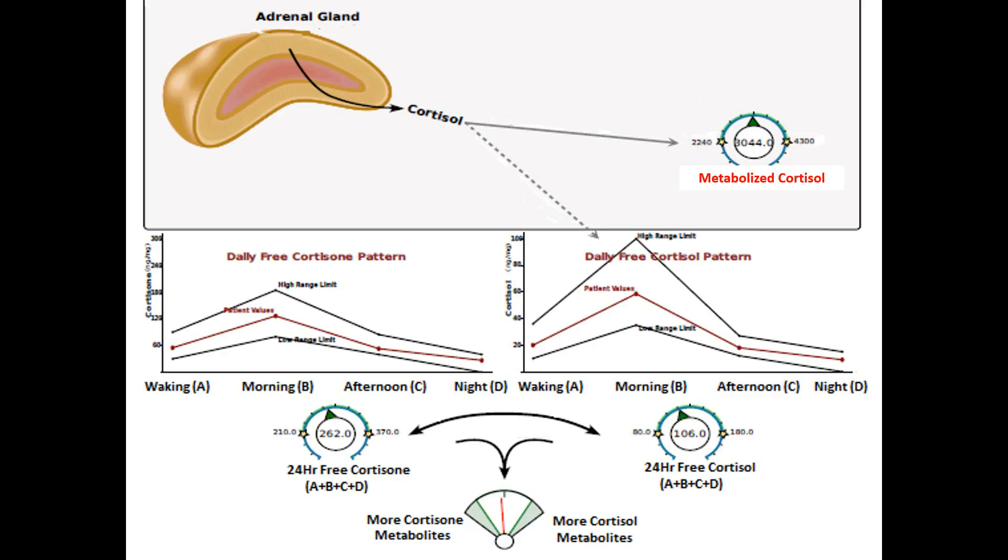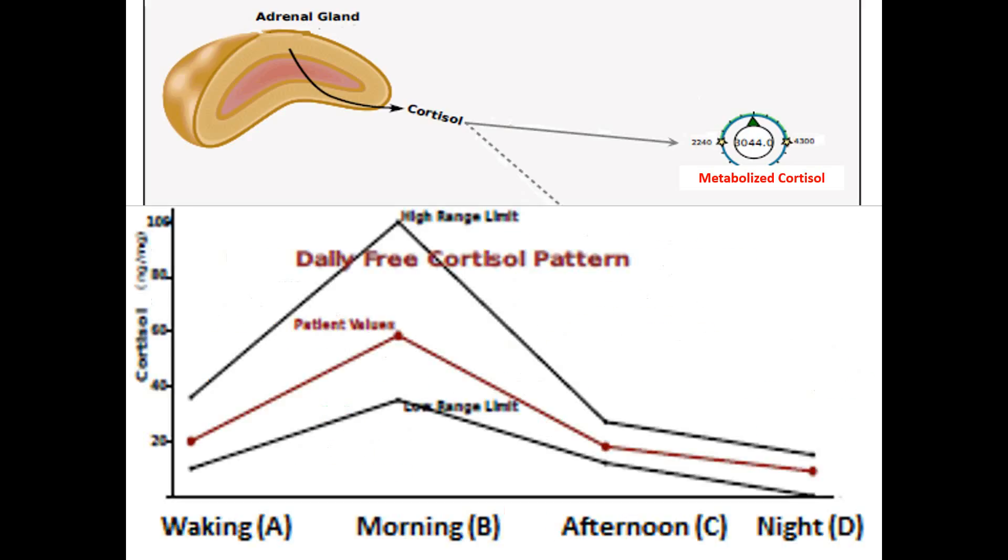When we're looking at the cortisol data, there's a lot of data to try to digest and make sense of. Probably the primary bit of information is that free cortisol pattern. What is cortisol doing over time in its free form? You've got four measurements.